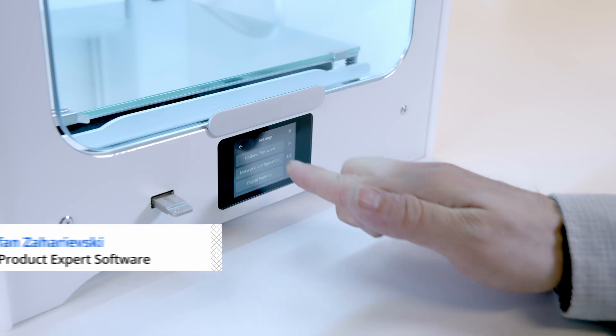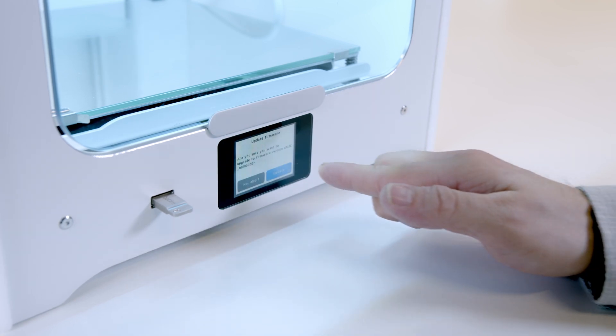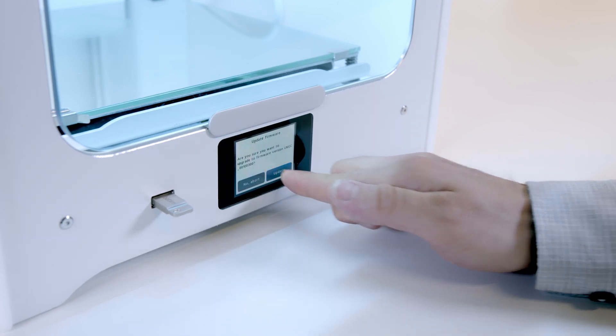Hi all, we've released firmware 1.3 for the Ultimaker 2 Plus Connect, so let's look at the new features. In this release we've improved integration with the digital factory and improved the printer material handling.